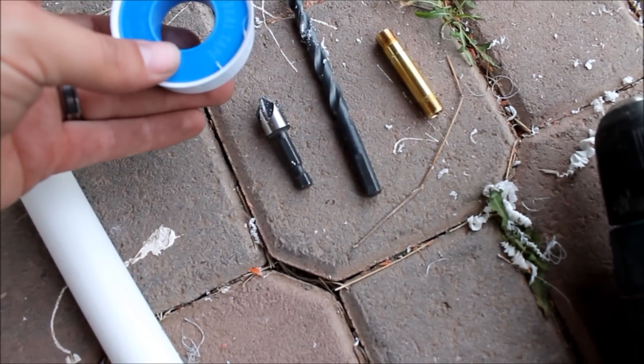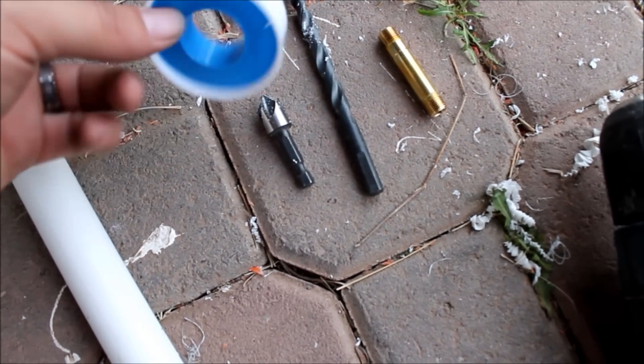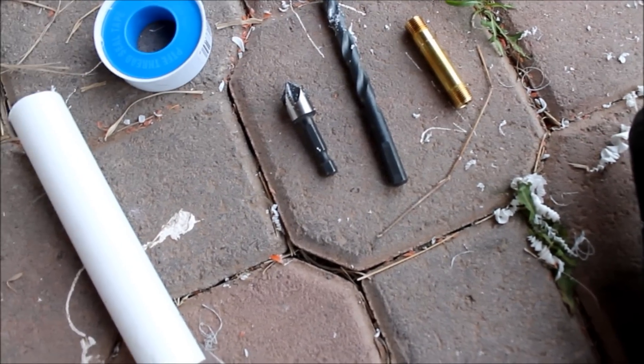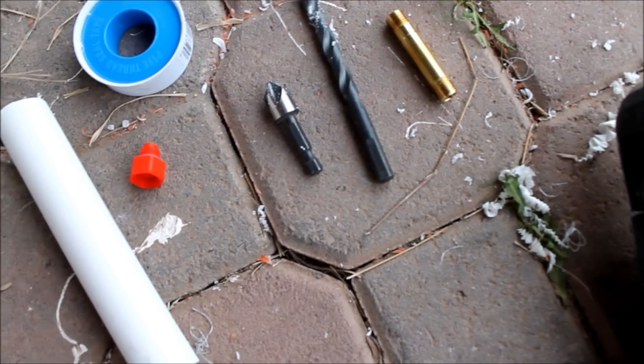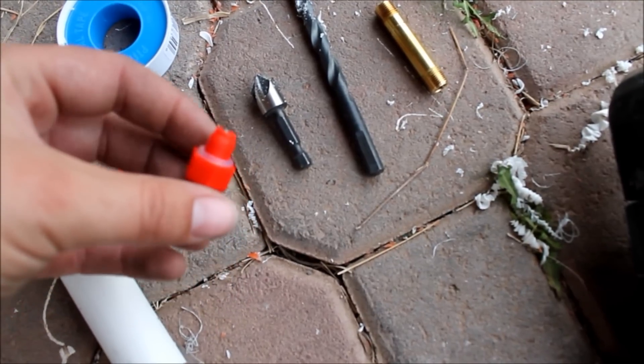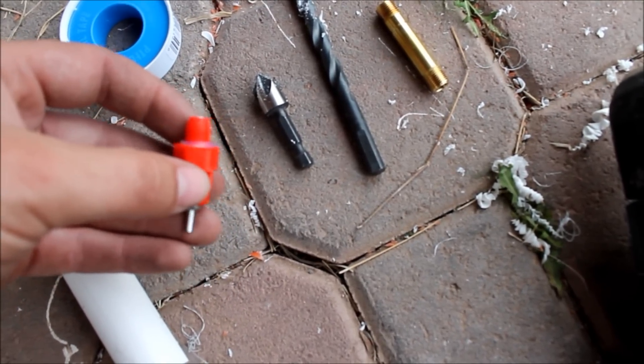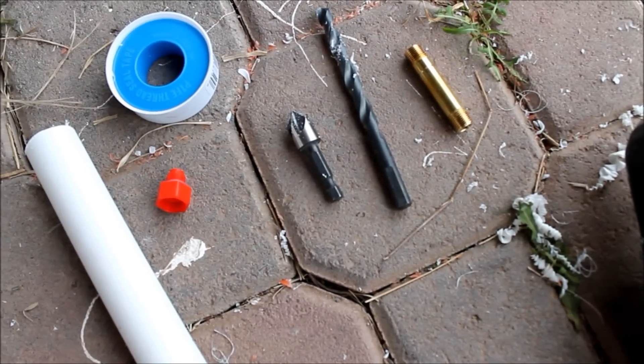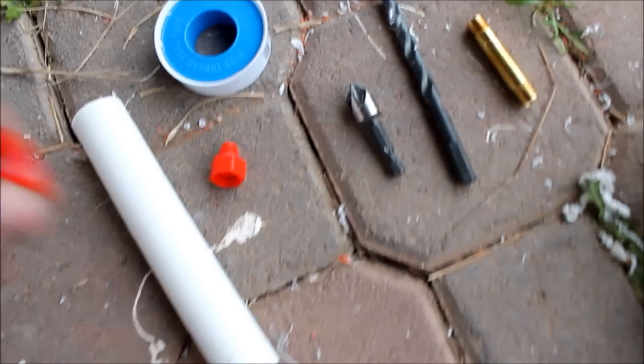Wrap it around the thread section of your chicken nipple and then it threads right in. That helps to seal it and keep it nice and drip free. Now they also come with a little rubber gasket on them.